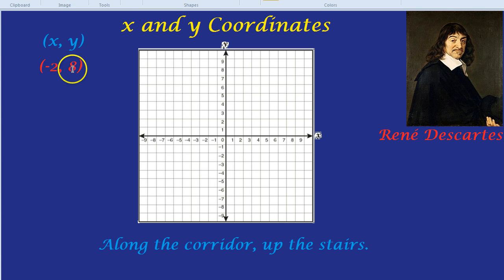Okay, (-2, 8). So -2 along the corridor. Well here's the corridor, the x-axis. Remember the first number is the x-coordinate. Where is -2 along this corridor? -2 is right here. That's -2. So should we plot the point there? Well we haven't gone up the stairs yet.